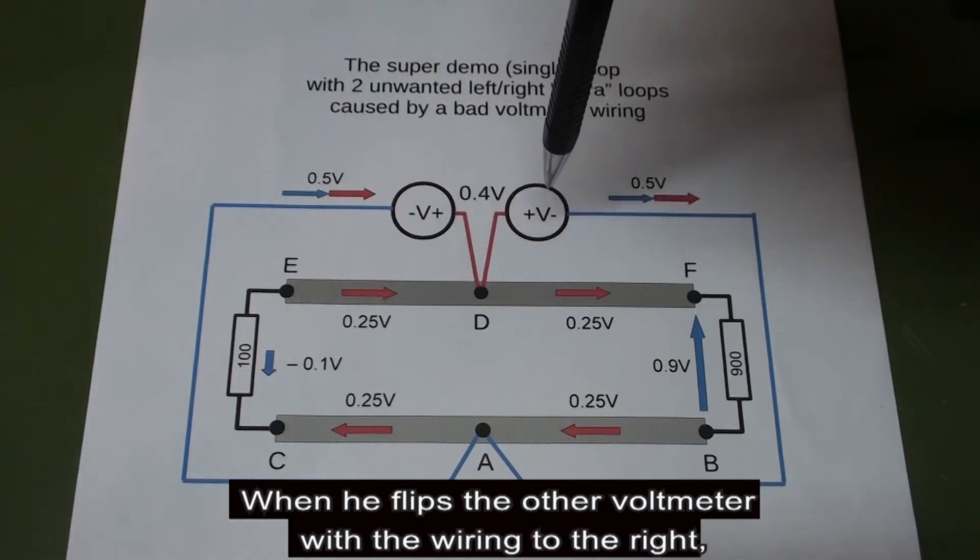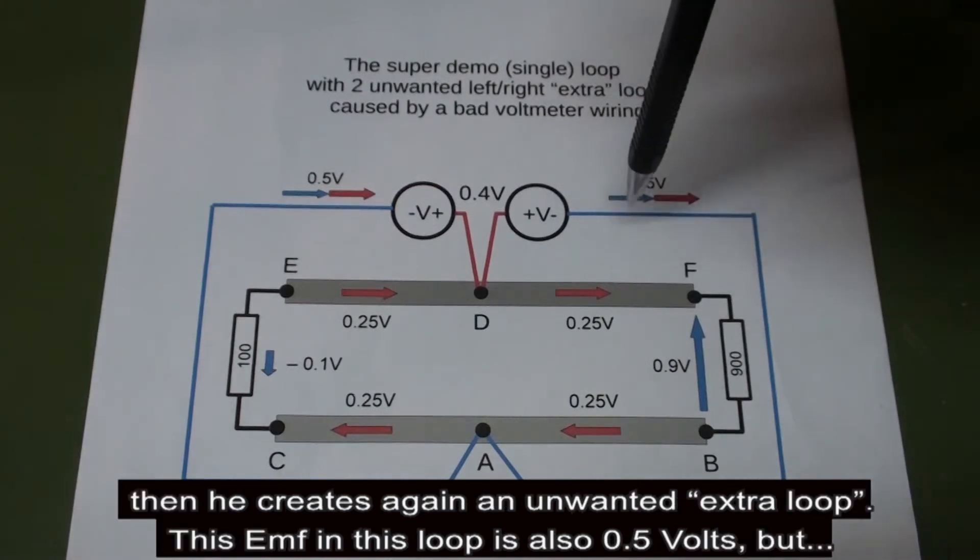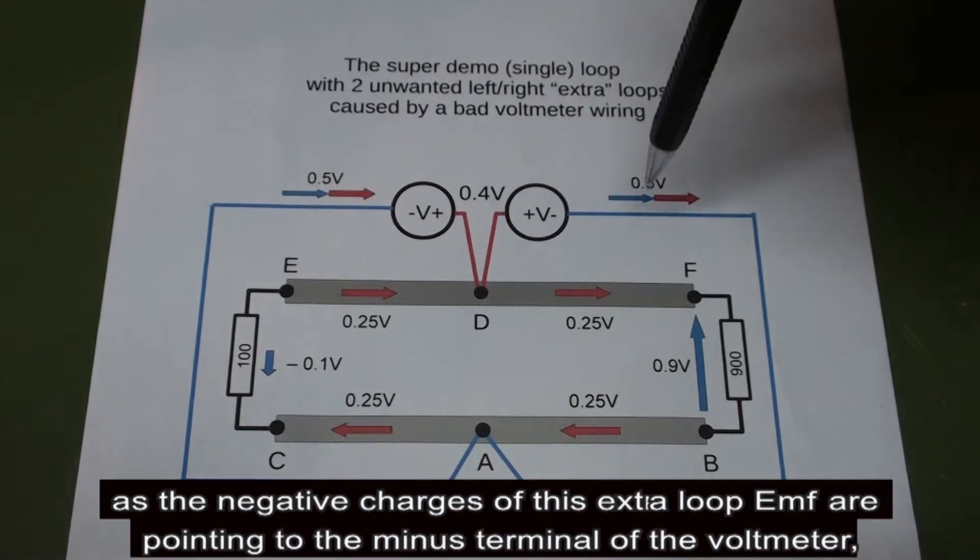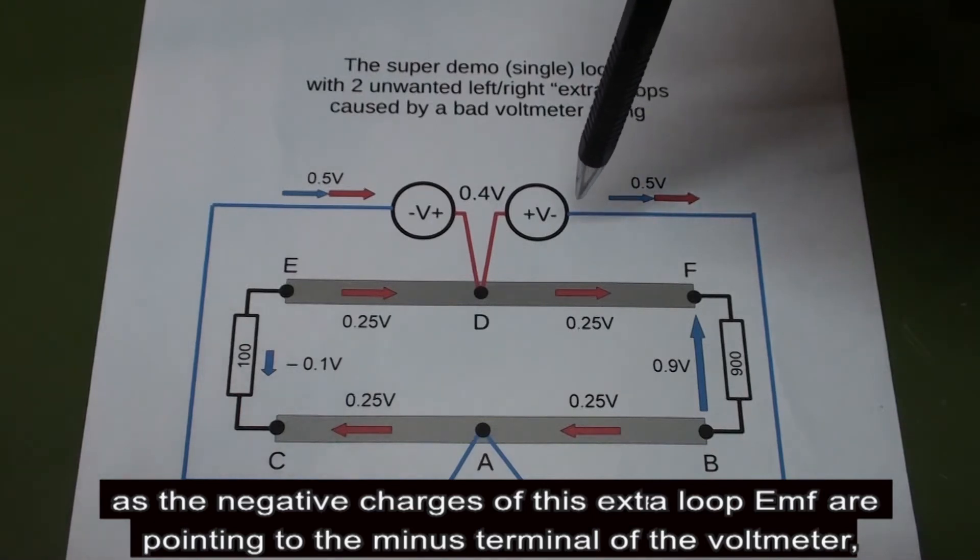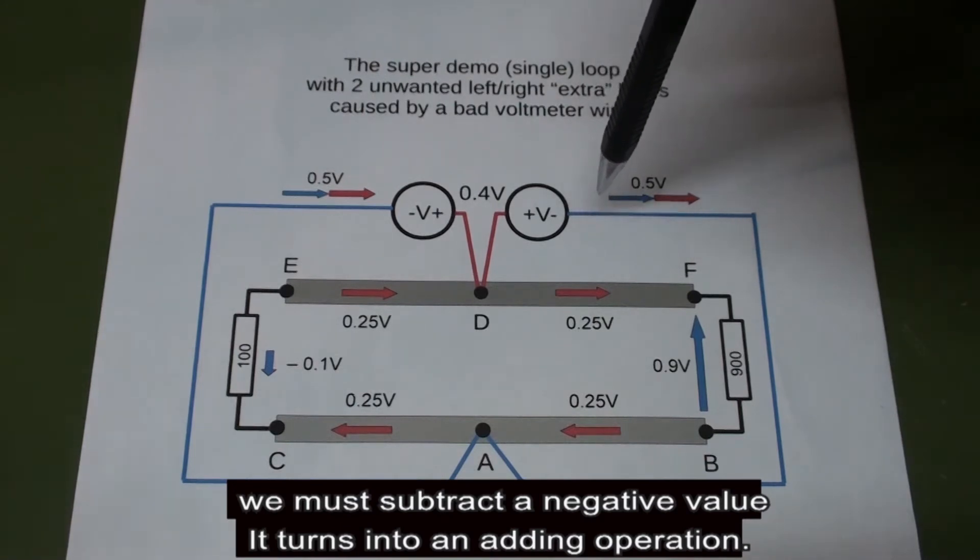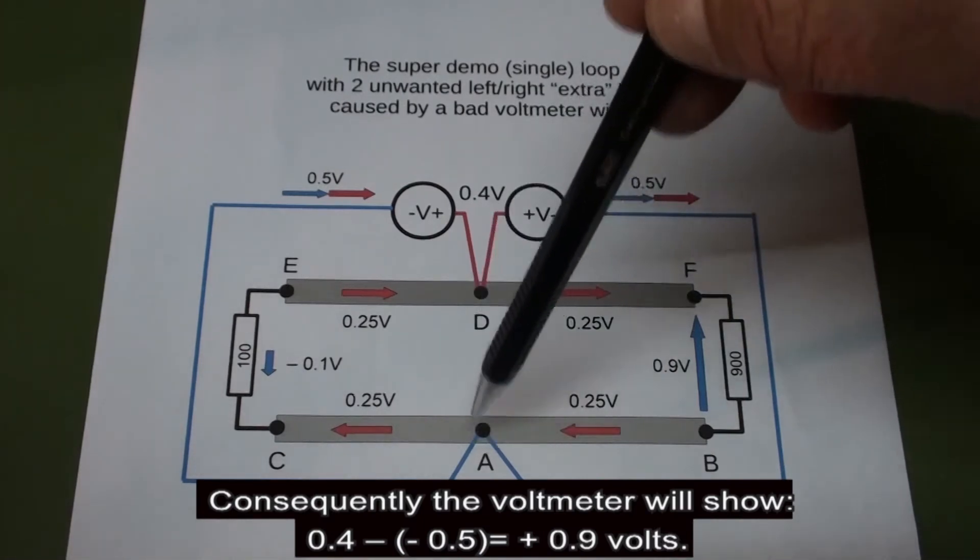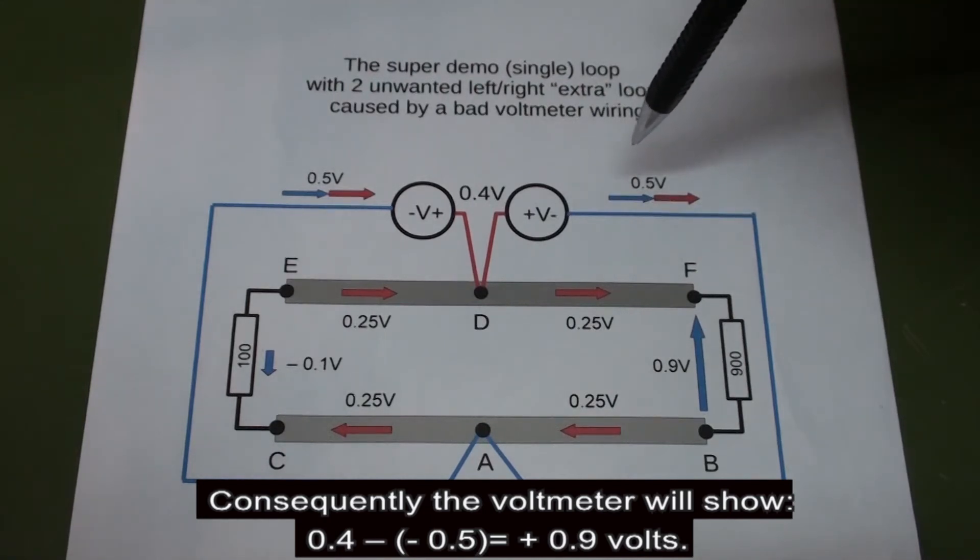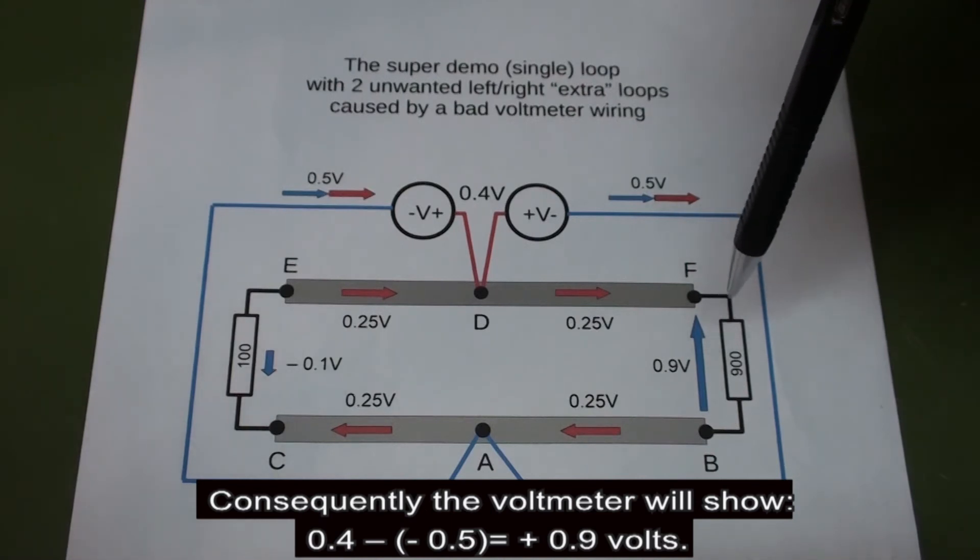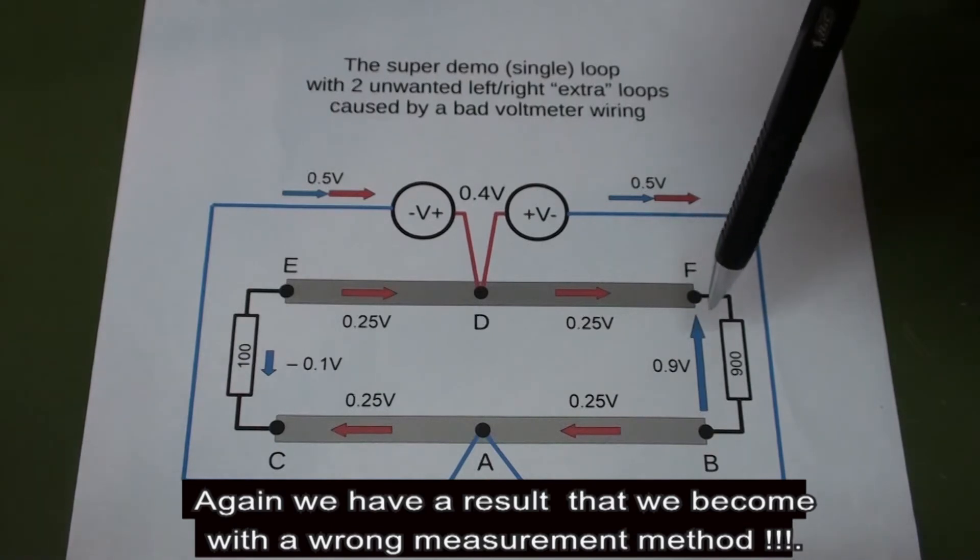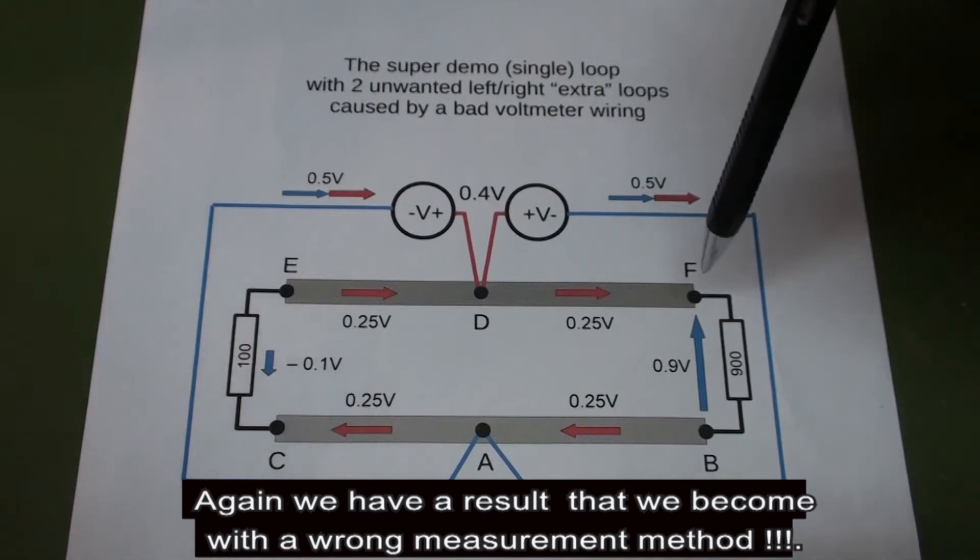When he flips the other voltmeter with the wiring to the right, then he creates again an unwanted extra loop. And this EMF in this loop is also 0.5 volts. But as the negative charges of this extra loop are pointing to the minus terminal of the voltmeter, we must subtract a negative value. It turns into an adding operation. Consequently, the voltmeter will show 0.4 minus minus 0.5, and this is plus 0.9 volts. Again, we have a result that we get with a wrong measurement method.